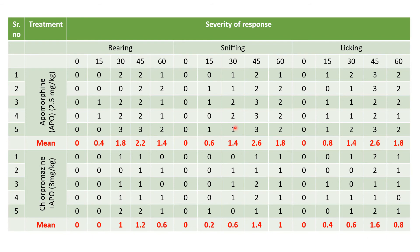Observations — rearing, sniffing, and licking response: for apomorphine, the rearing response at 0 minutes is 0, at 15 minutes 0.4, then 1.8, 2.2, and 1.4 (mean values). When chlorpromazine is given before apomorphine, as it is an antipsychotic drug, it reduces the rearing response: 0.4 reduced to 1, 1.8 reduced to 1, 2.2 reduced to 1.2, and 1.4 reduced to 0.8 and 0.6. Similarly, sniffing and licking responses are also reduced due to chlorpromazine.